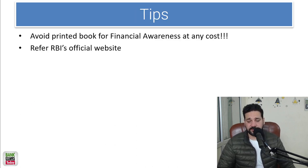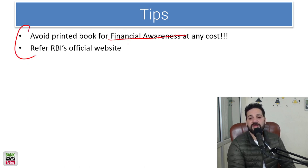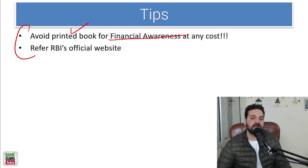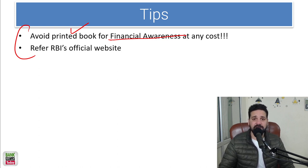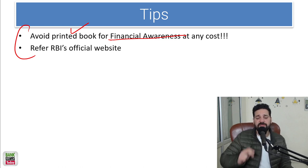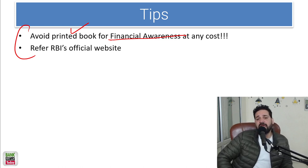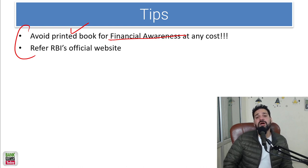Two important tips for financial awareness: first, always avoid printed books — books available online or in the market contain totally outdated and irrelevant data, especially for topics like priority sector lending and insurance, so do not read them. Second, the RBI's official website is the most reliable source of information. It is the best study material available, and I recommend everyone follow it.